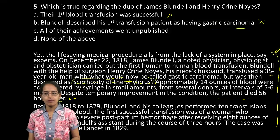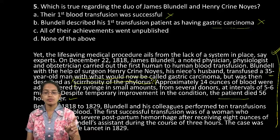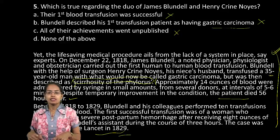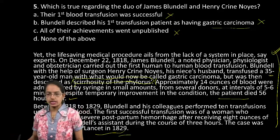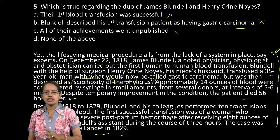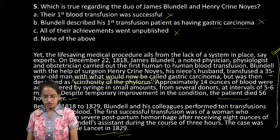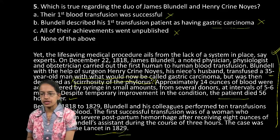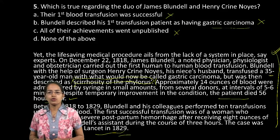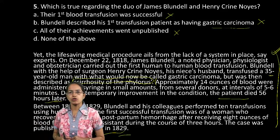That statement again becomes incorrect. The last statement says all their achievements were unpublished — that's also incorrect, because in the last line, the second case was published in Lancet in 1829. So all three options are incorrect. Rahmat and Priya have the right answer. This was the second question on the second passage.